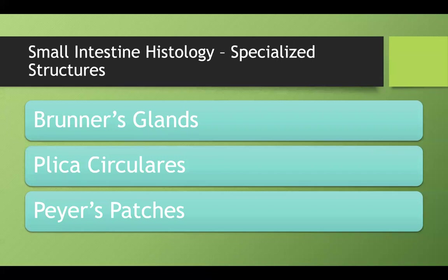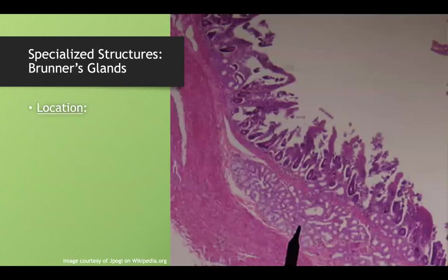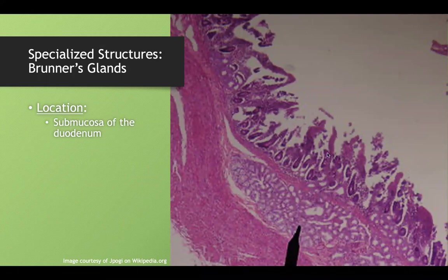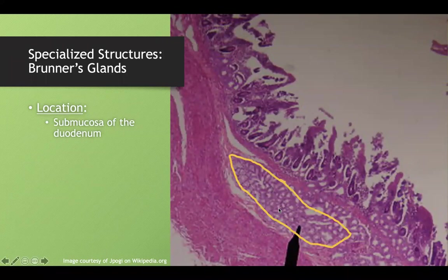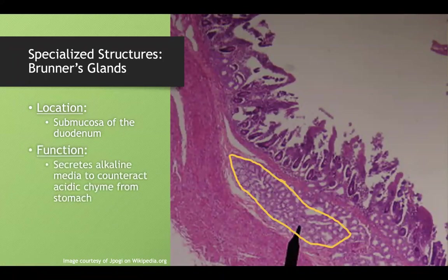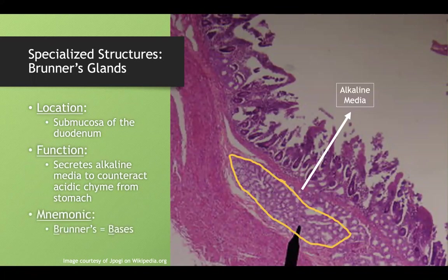There are three specialized structures in the small intestine. First, Brunner's glands are located in the submucosa of the duodenum and secrete alkaline media to counteract acidic chyme from the stomach. Remember: the 'B' in Brunner's stands for 'base' — Brunner's glands produce a basic media.